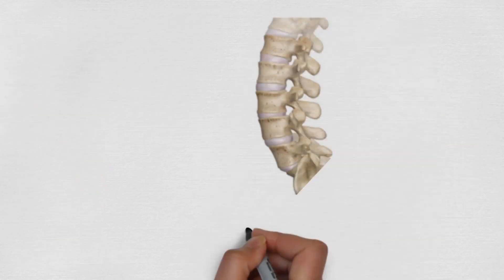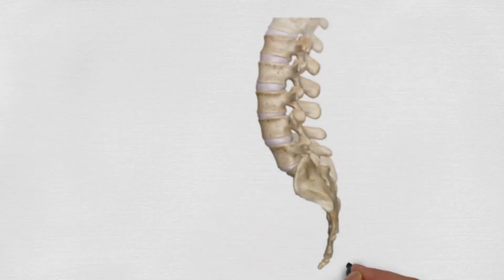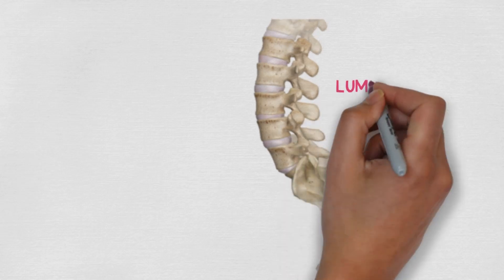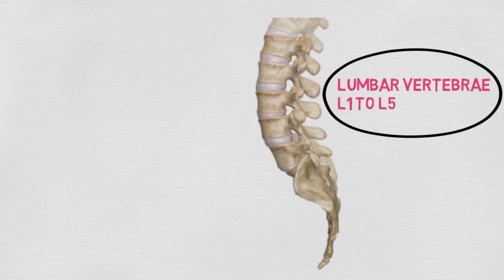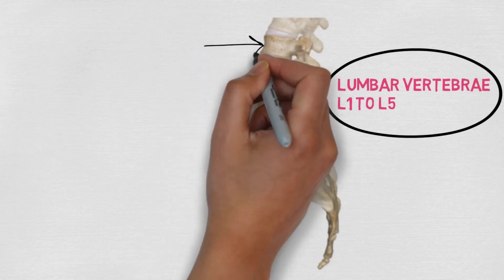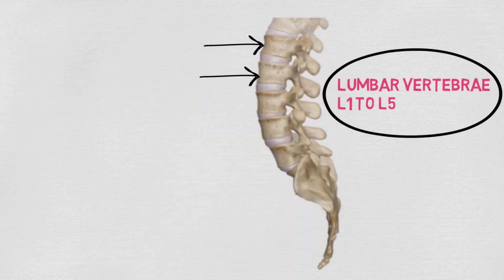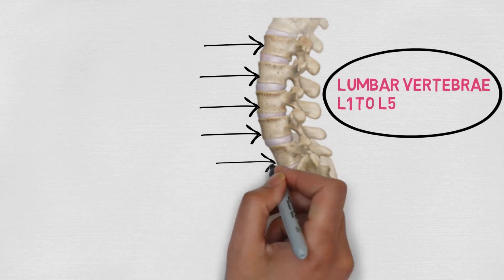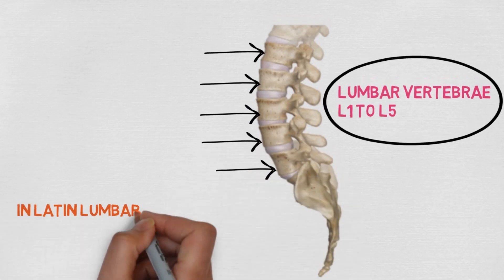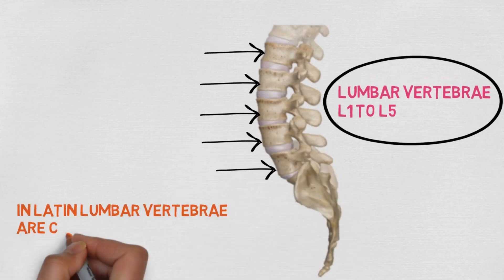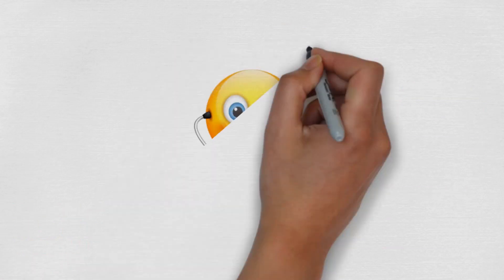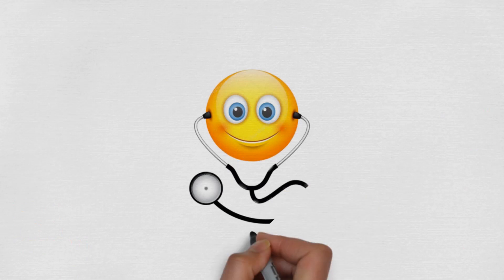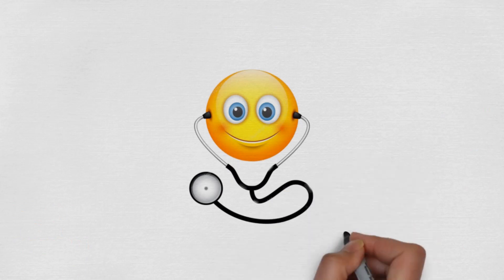This is the figure for lumbar vertebrae in the spinal column. As we have discussed earlier, there are 5 lumbar vertebrae — lumbar 1, lumbar 2, lumbar 3, lumbar 4, and lumbar 5. In Latin, lumbar vertebrae are called vertebrae lumbales. Let's discuss the various characteristic features they possess and look at them in the figures.